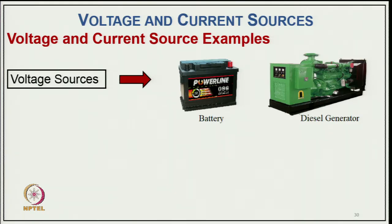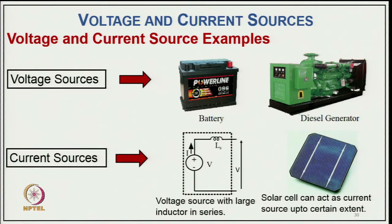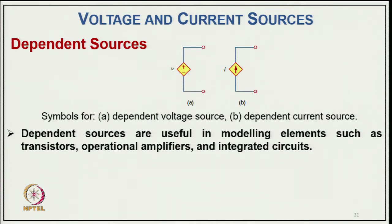Typical examples of voltage sources are a battery (DC source) and a diesel generator (which can give AC voltage, single-phase or three-phase). For a current source, a DC voltage source with a series inductor behaves like a current source because current cannot change quickly with series inductance. A solar cell can also act as a current source up to a certain extent, as current-source behavior is part of the characteristic of a solar cell. Otherwise, there are very few other current sources in nature.